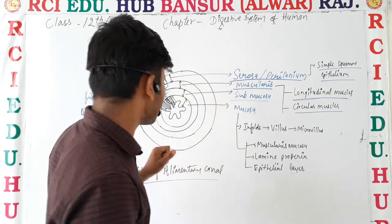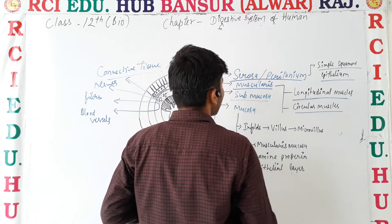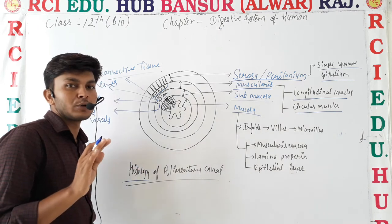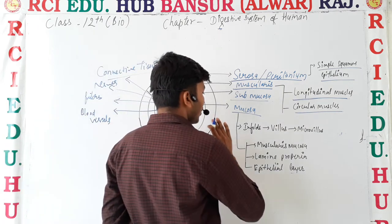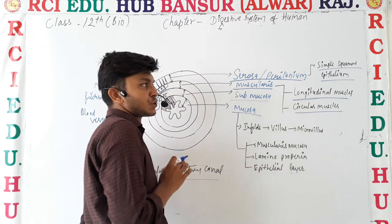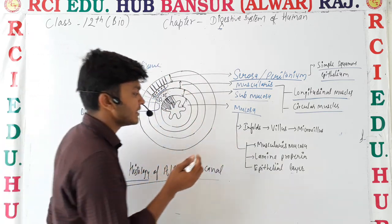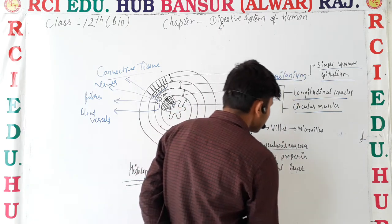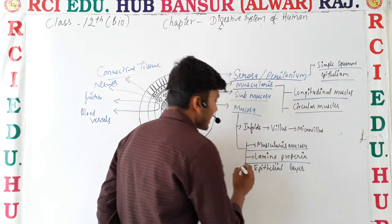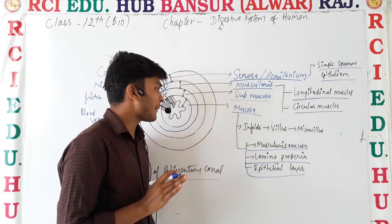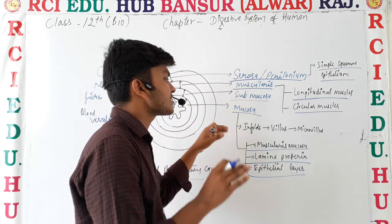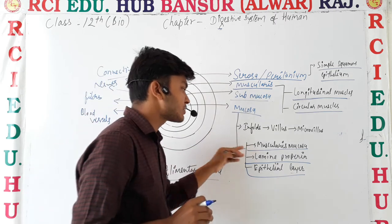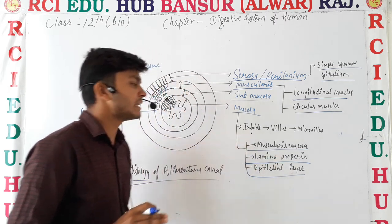Submucosa also contains connective tissue like adipose tissue. The innermost layer is the mucosa, which consists of three layers: the outermost is muscularis mucosa, the middle is lamina propria, and the third is the epithelial layer.